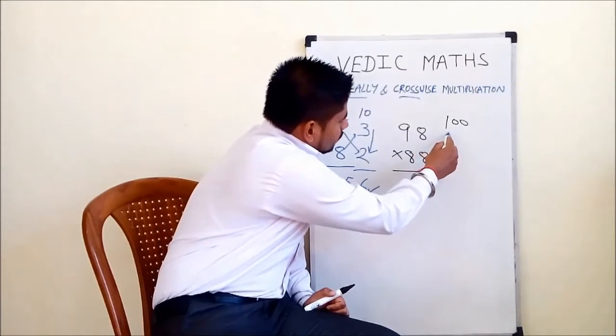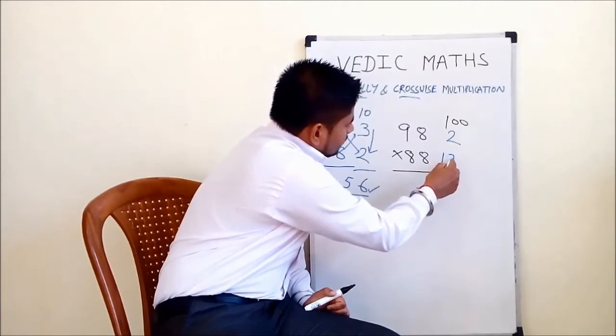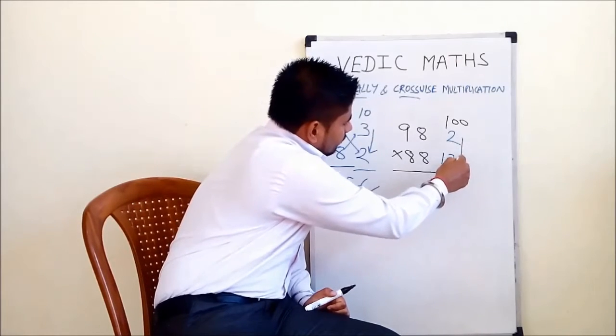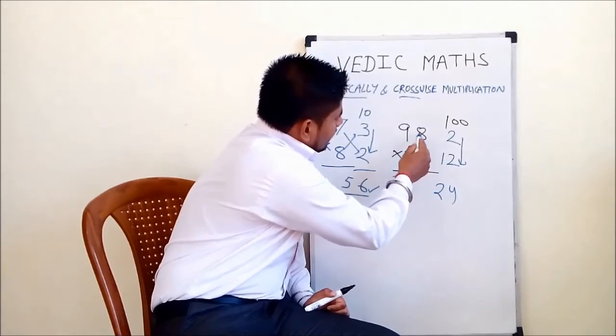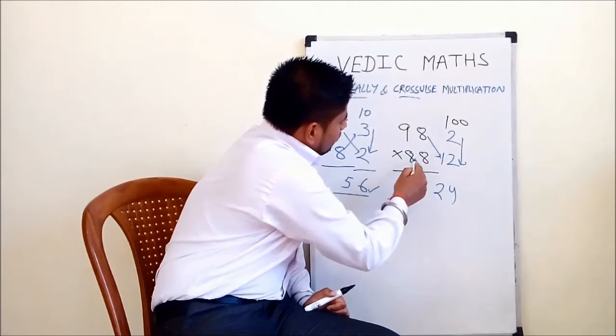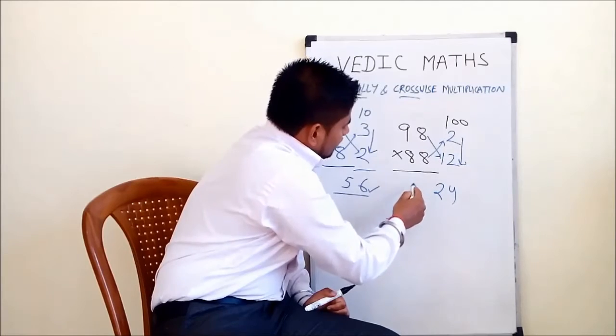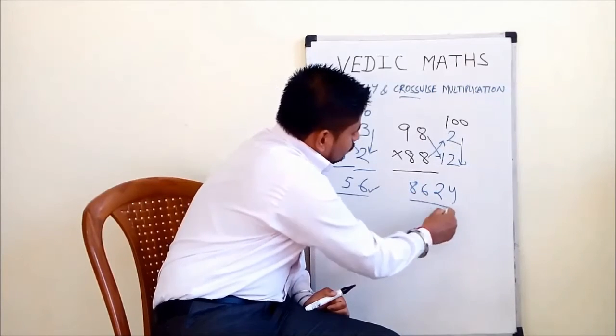Similarly, 98 plus 2 is 100 and 88 plus 12 is 100. So we multiply vertically, 12 into 2, that is 24. And either we subtract 98 minus 12 or 88 minus 2, that is 86. 8624 is the answer.